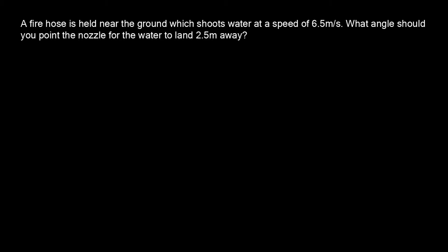So the first thing we have to do is draw a picture. We have the ground over here, here's the spout — the nozzle — and the water comes out and it lands right there. From here to here is 2.5 meters.